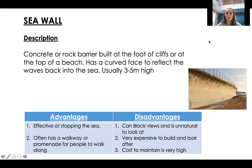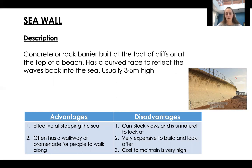The first strategy is a seawall — a concrete or rock barrier built at the foot of cliffs or the top of the beach. It has a curved face to reflect waves back out to sea and is usually three to five metres high. It's a man-made structure requiring concrete and machinery. Disadvantages include being expensive, unattractive, and costly to maintain. An advantage is it can have a walkway or promenade, as seen at Blackpool.